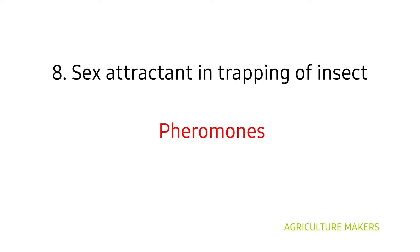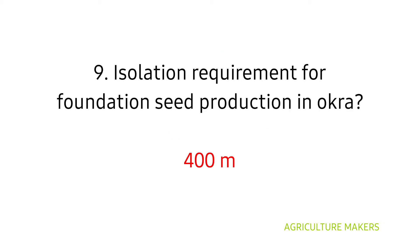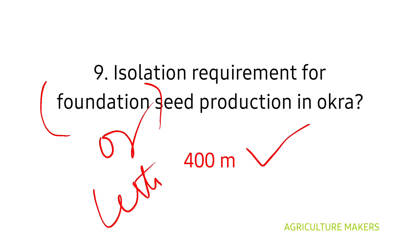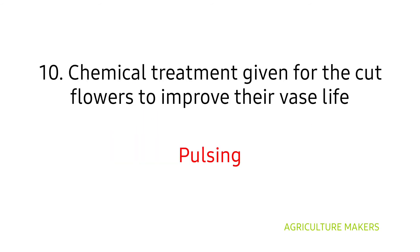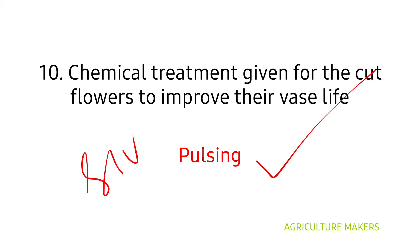Sex attractant entrapping of insects is called pheromones — one of the important entomology questions. Isolation requirement for foundation seed production in okra is 400 meters. Read the question well to check whether it is asked for foundation or certified seed. The chemical treatment given to cut flowers to improve their vase life is known as pulsing, and chemicals involved in pulsing include silver thiosulfate and 8-HQC.